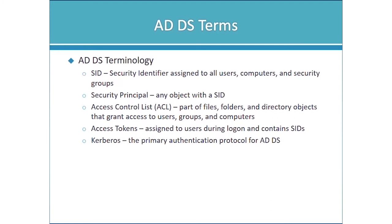A security principal is just another term for any object with a SID — a user account, a security group, a computer account, and so on. We also mentioned the ACL — its full name is actually DACL, or Discretionary Access Control List. It is part of files, folders, and directory objects, and it grants access to users, groups, and computers. This is where authorization comes from — individual access control entries that either grant or deny access to a particular user or group.